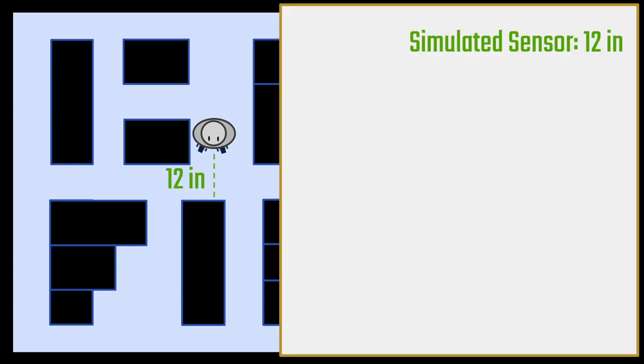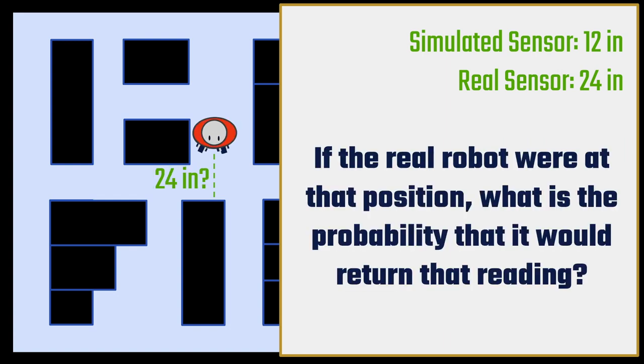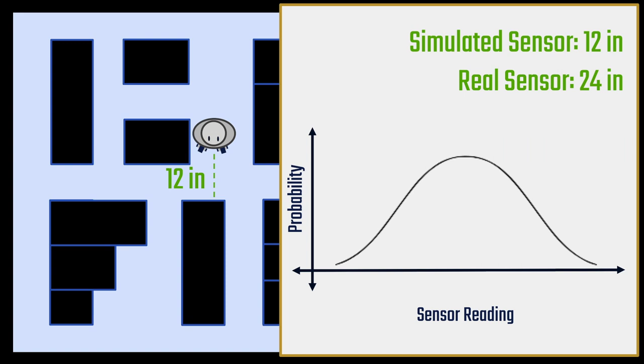This step is called redistribution. So I'll show you an example. Here's a simulated robot whose sensor reads 12 inches. The real sensor on the real robot reads 24 inches. You have to find out if the real robot were at the simulated robot's position, what is the probability that it would return the real sensors reading? This probability can be found using the bell curve.